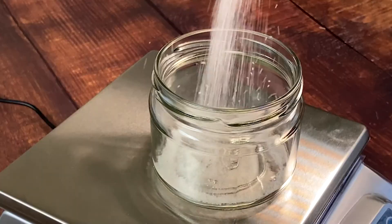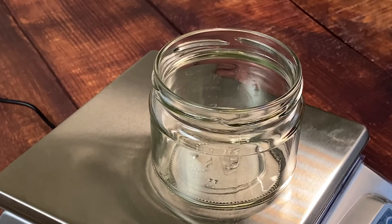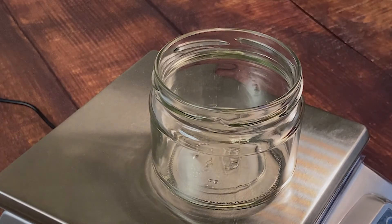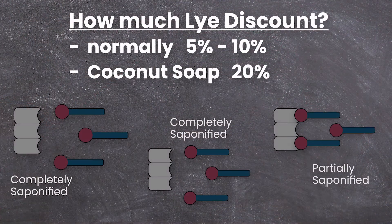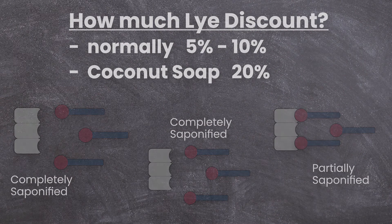And how much lye discount should you use? For most soap recipes, 5–10% is a good range. When you want to make soap with only coconut oil, you can go up to 20%.